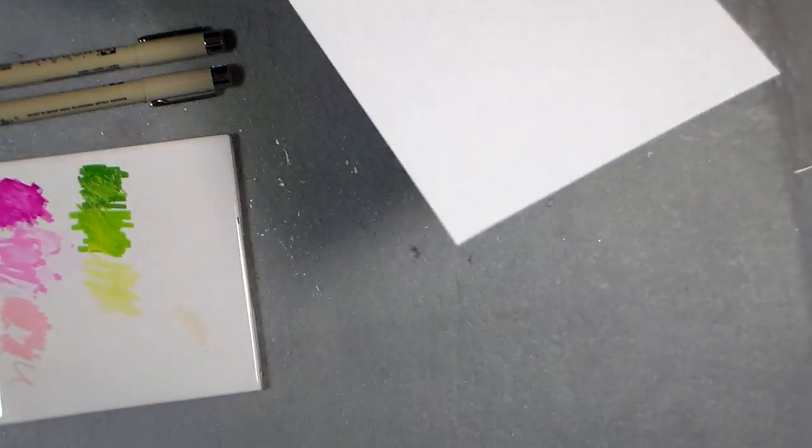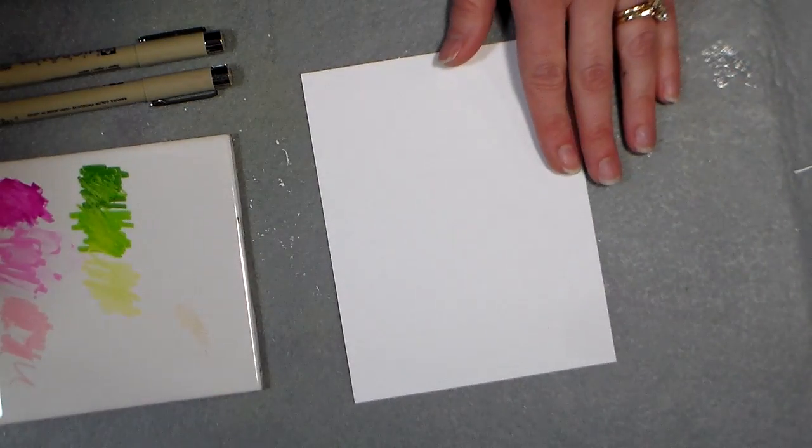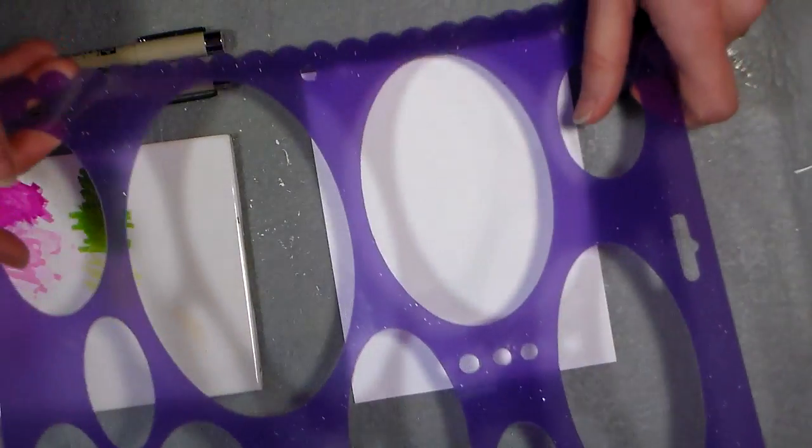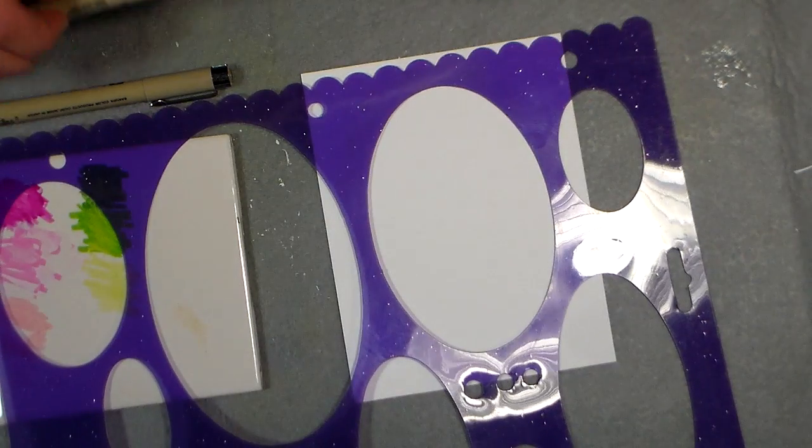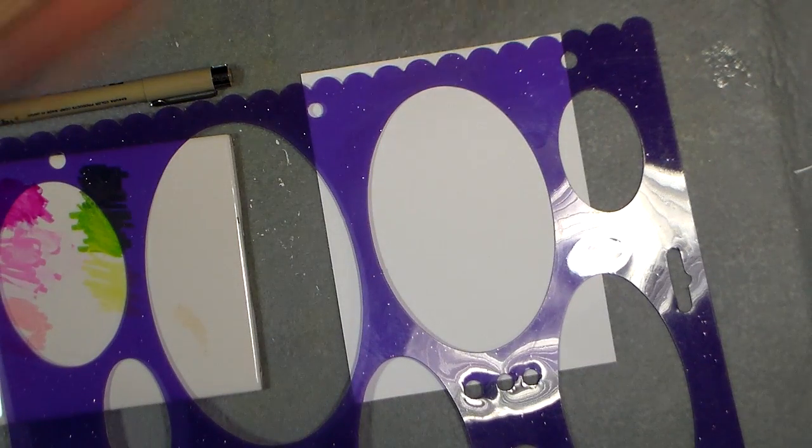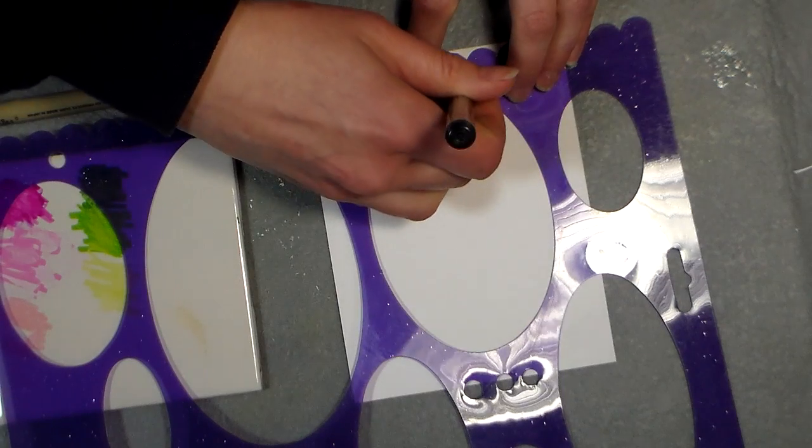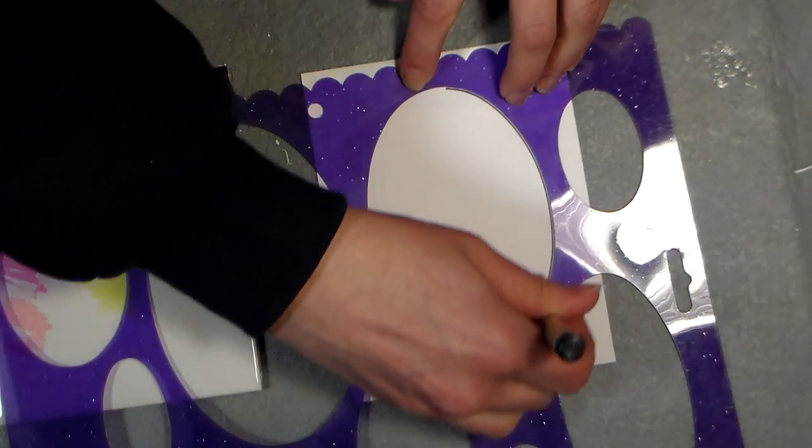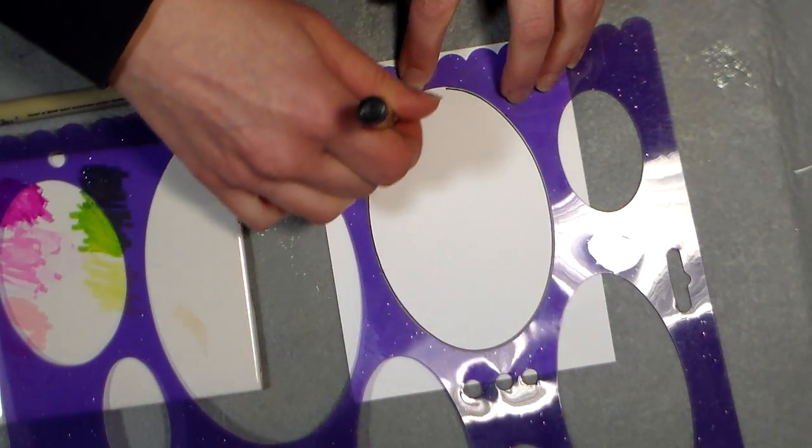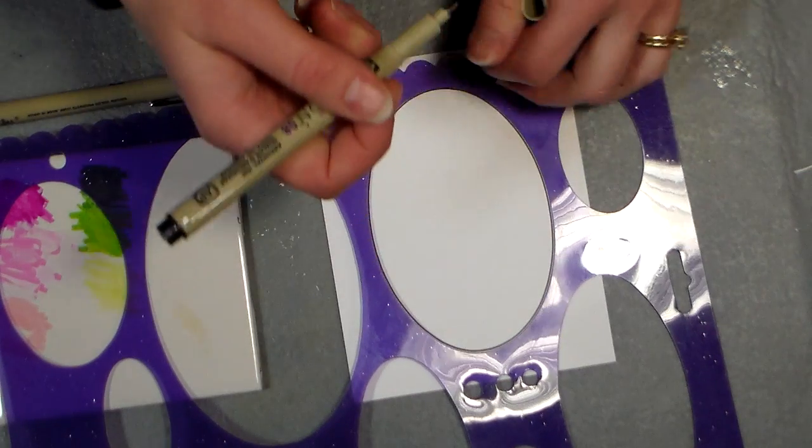I'm using a quarter sheet of Neenah Classic Crest cardstock in solar white. I'm going to use an oval template just to get myself a little frame. I'm using a number 08 micron pen, and I'm just going to trace my frame. This will give us an area to work, and we can cut that out easily later.